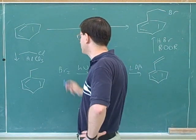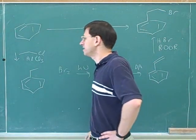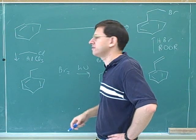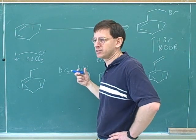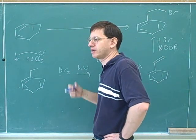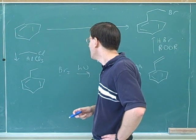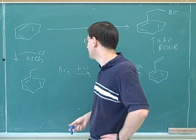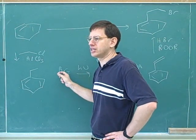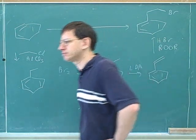The important Chapter 22 material here is the extra reactivity of benzylic carbons. Earlier we learned that benzylic carbons can be oxidized to carboxylic acids, and now we're learning that they are very reactive for radical halogenations as well.